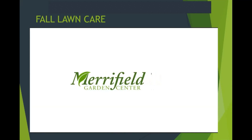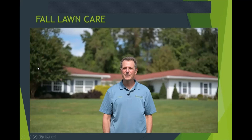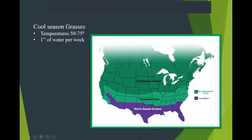That was a quick overview of what we're talking about today. I really want to explain why we have these recommendations and where they come from. Most of us are growing cool season turf grasses, whose happy spot is about 50 to 75 degrees with an inch of water or more per week. In the northern regions, grasses thrive beautifully in those conditions.